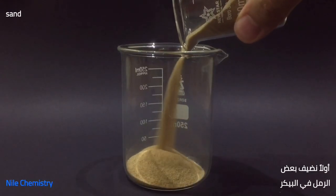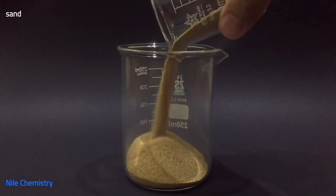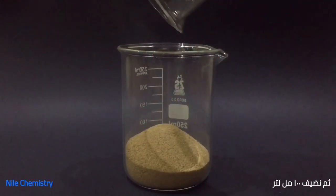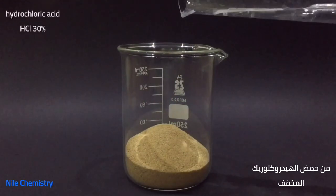First, we add some sand to the beaker. Then we add 100 milliliters of dilute hydrochloric acid.